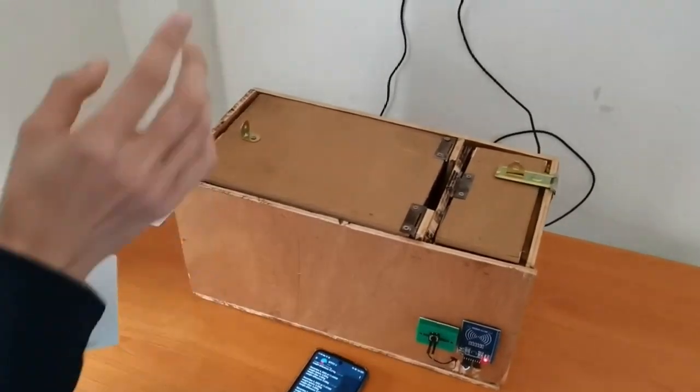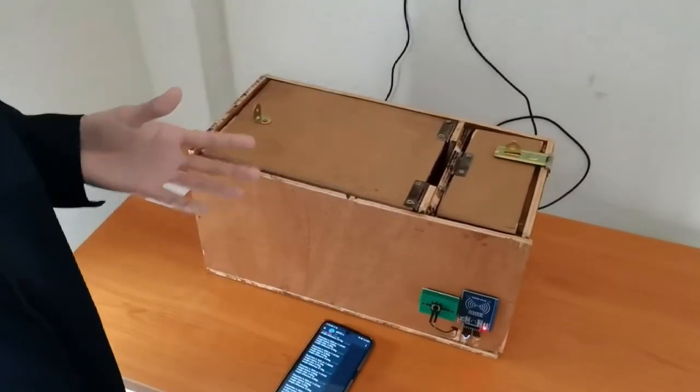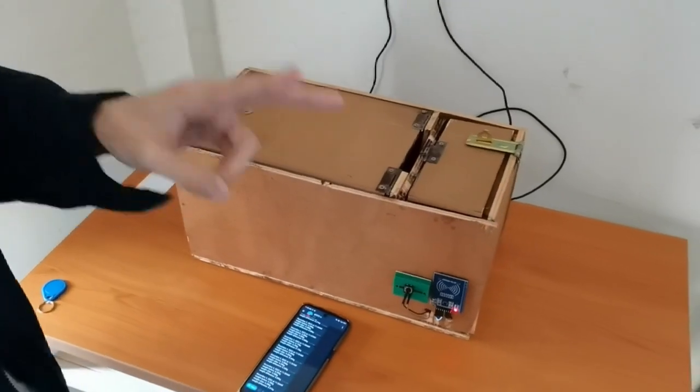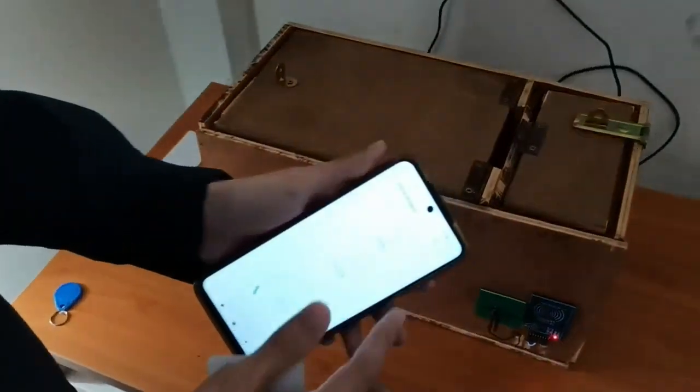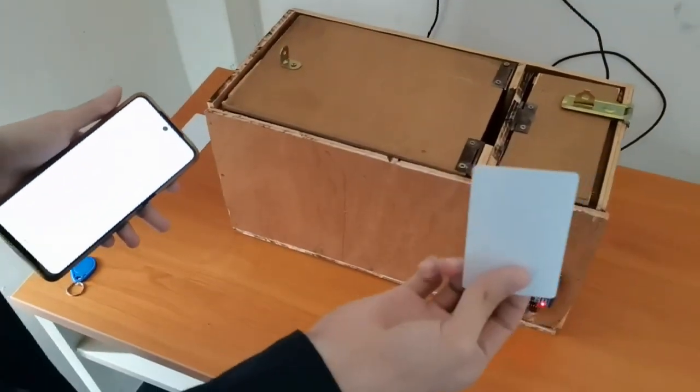Okay, so when we arrive at home, we want to take out the item. We have two options to unlock the door. The first one is use the Blink app. And the second option is use the RFID. So let me show you.